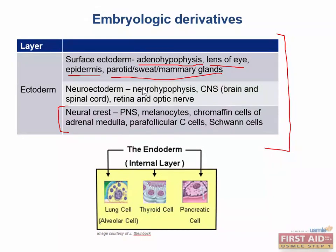Neuroectoderm gives rise to the brain and spinal cord, as well as the retina and optic nerve. We also have astrocytes, ependymal cells within the ventricles, and the pineal gland, which secretes melatonin. In general, when you hear neuroectoderm, think CNS.